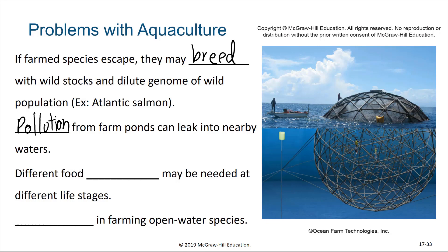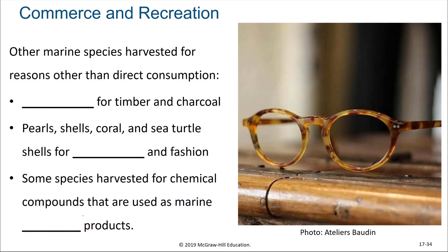Some of the difficulties in aquaculture include different food requirements needed by organisms as they are raised through their different life stages, and there are simply difficulties when it comes to farming open-water species. Now, some other reasons why marine organisms are harvested include commerce and recreation. Mangroves can be chopped down for timber and charcoal. Pearls, shells, coral, and sea turtle shells are used for jewelry and fashion, with tortoise shell being commonly used in glasses and other decorative items.